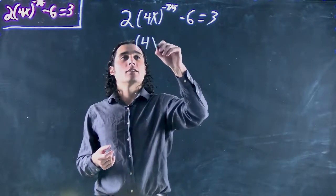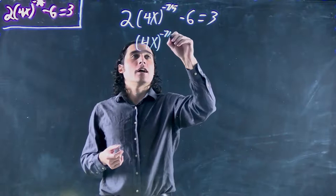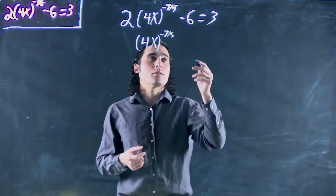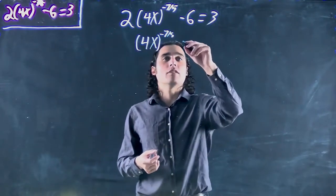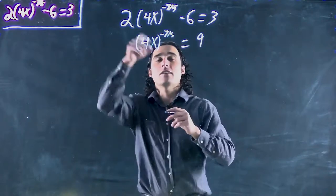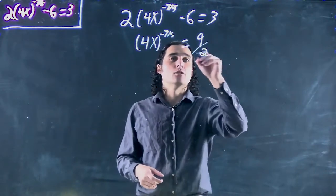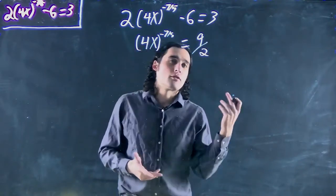So first things first, I added 6 on both sides to get rid of this minus 6 which would have given me 9, and then I'm dividing both sides by 2 to get rid of this 2 in front. So I get 9 over 2 or 4.5.